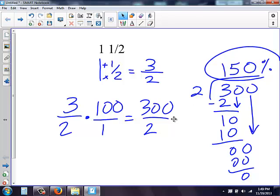Again, therefore, one and a half is the same thing as three halves as a fraction. We multiply by one hundred over one. We get our fraction there by multiplying across, and then we need to do long division to figure out the actual percent. Alright. Thank you.